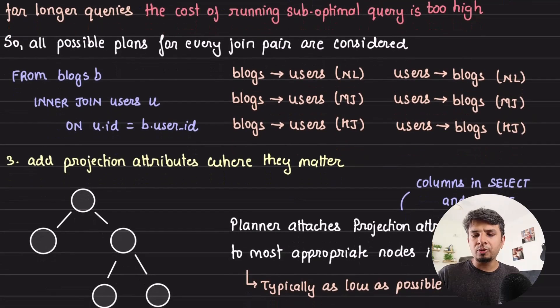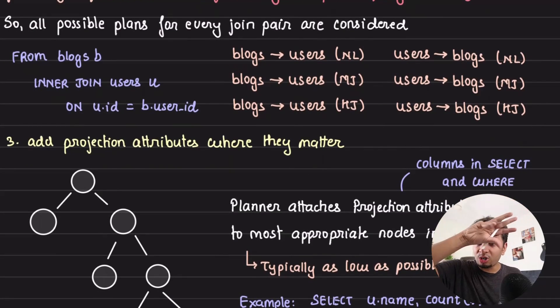For example, if I'm doing a join of the table for blogs with users on user ID equal to blog.user_id equal to user.id, then I have these possible cases. I join blogs and users with nested loop, blogs and users with merge join, blogs and users with hash join, or users and blogs with nested loop, users and blogs with merge, and users and blogs with hash. All of these candidates are added, and then for each one of them, you consider the cost and then pick the best one.